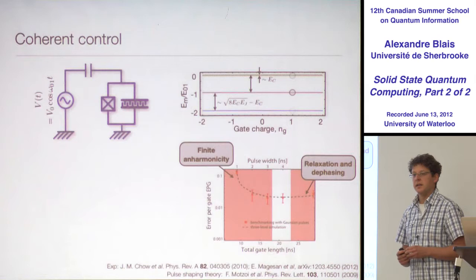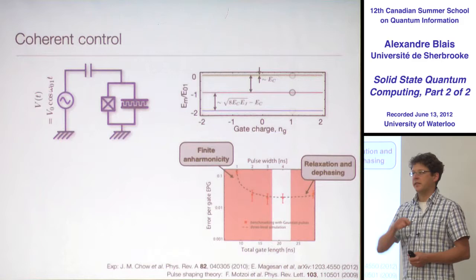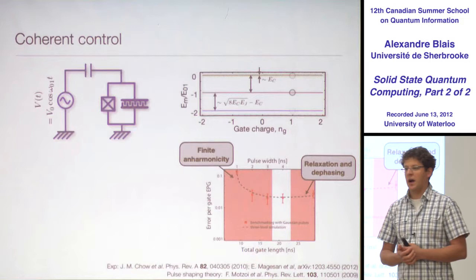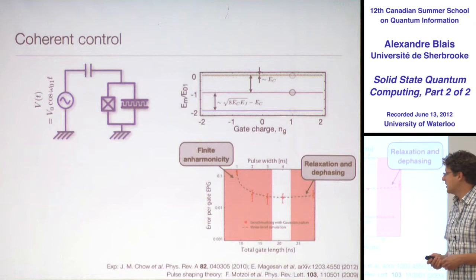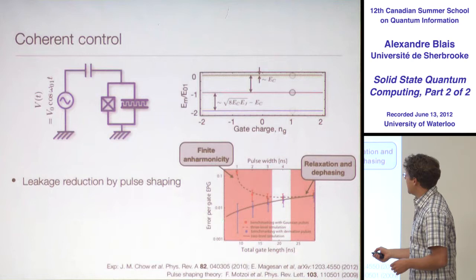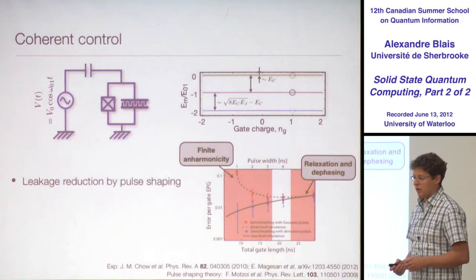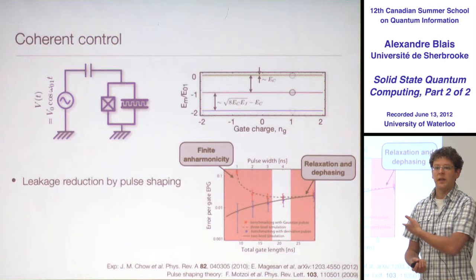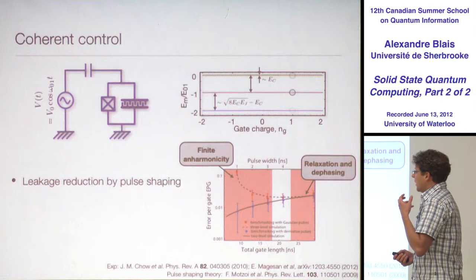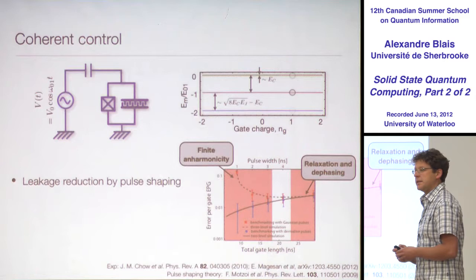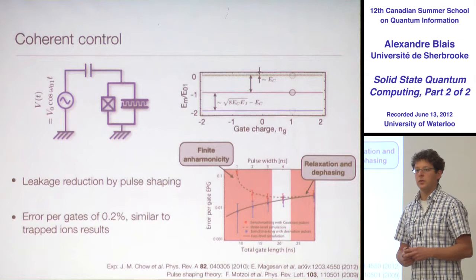Fortunately, you can pulse-shape these. Instead of sending a square pulse, you can send different shapes. You can figure out analytically what shape removes this leakage. By doing pulse shaping, you find that the error per gate just goes down and down. So by pulse shaping, you can have short gates without suffering from the finite anharmonicity, and the error per gate is comparable to ion trap results.